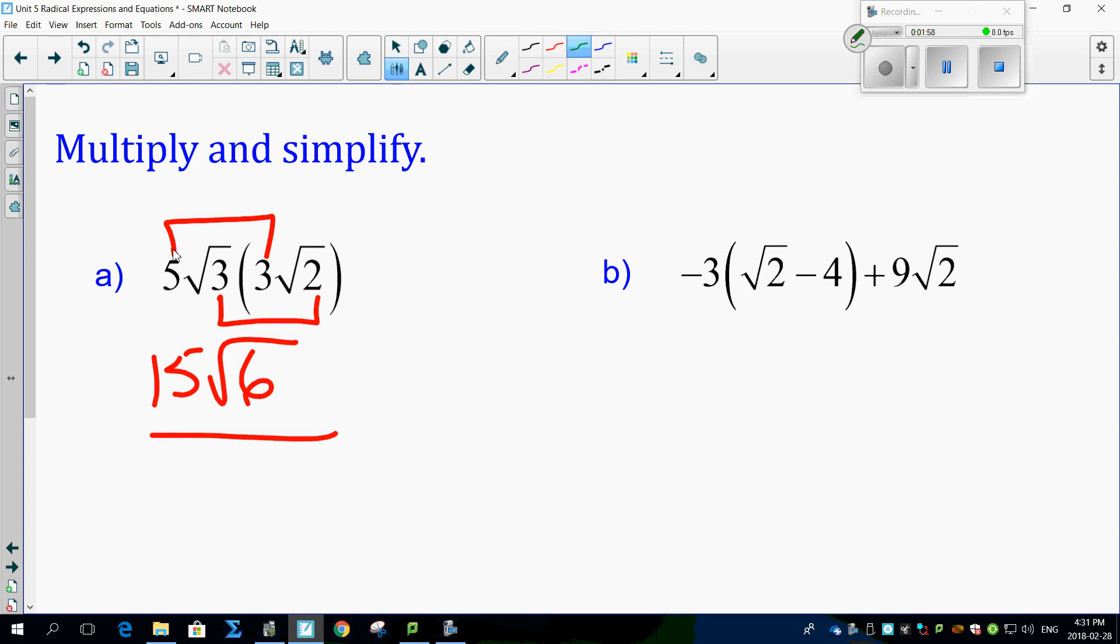Look at this next question. Look at B. This is, uh-oh, you've got a minus 3 outside the brackets. Okay, so what? Distribute it. You've got minus 3 root 2. Minus 3 times minus 4 is positive 12. And then put the rest of it in there. And look at this.